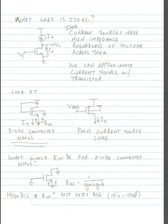So what load is ideal in an IC process? It turns out that a current source load is the ideal load in an IC process.